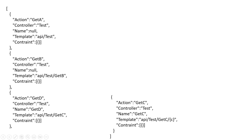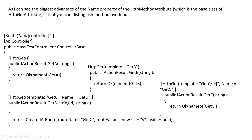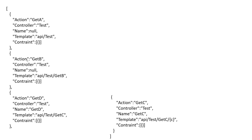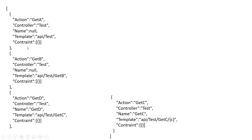If you are using the route debugger in your application, that session file will be returned. You can see that action GET A, controller test, and name is null — because the name property was null in the GET A parameter. So controller name is test controller, action name is GET A, name is null, and the template is API test controller. The constraints are empty.